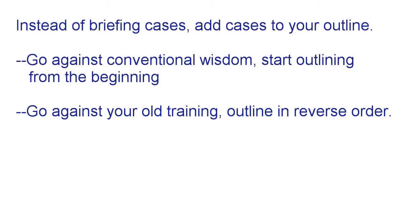This is a question we commonly get here at 7Sage. A lot of people brief cases, and we have videos and lengthy explanations about why briefing cases is the worst thing you could possibly do. So a good question is: what are you supposed to do instead? Our answer is you start outlining from the beginning and add short case parts to your outline. You're going against conventional wisdom in two ways — starting outlining from the beginning of the semester instead of waiting until the end. Everyone tells you to wait until later to let it all come together. I think that's a bunch of BS. You can start outlining from the beginning and still restructure things at the end to see how it all fits together.